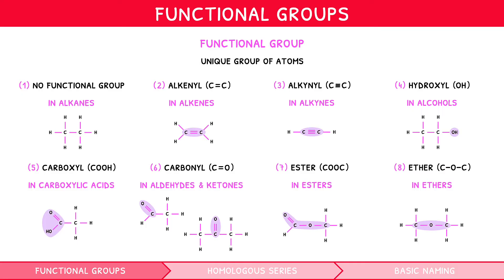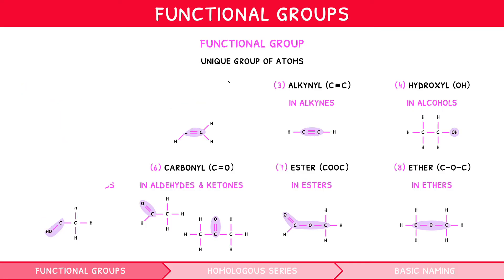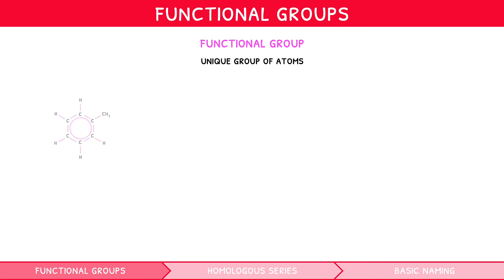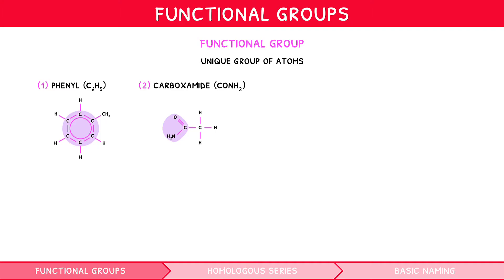There are also 3 additional functional groups that appear in questions, although you do not need to relate them to a group. Phenyl, i.e. a C6H5 group, found within aromatic compounds. Carboxamide, i.e. a N-C double bond O group. Nitrile, i.e. a C triple bond N group. And amine, i.e. a C-N bond, where the N is bound to two other species.